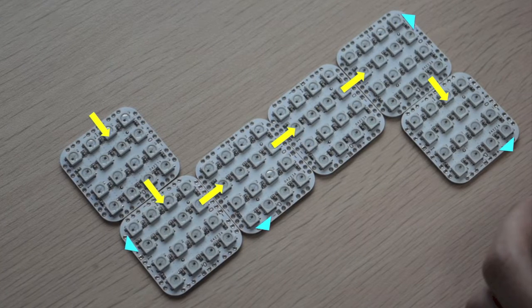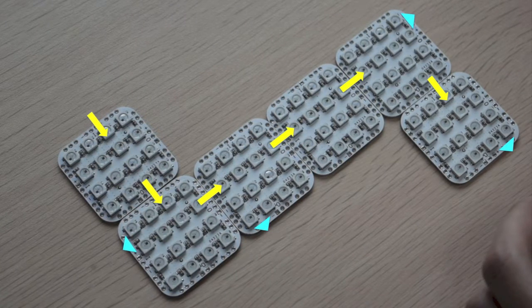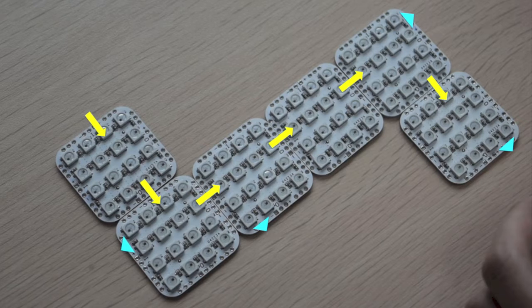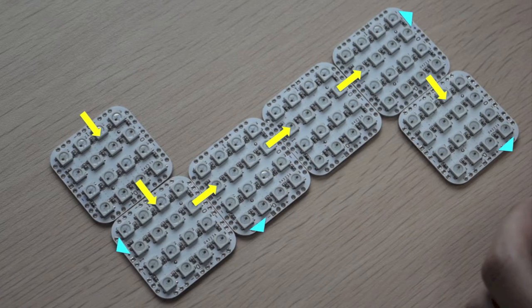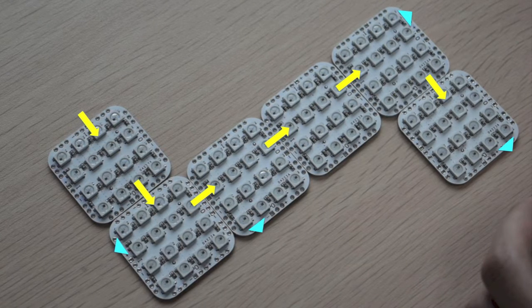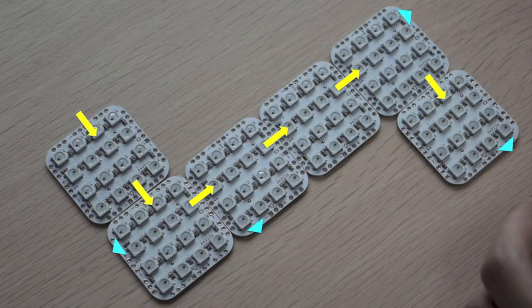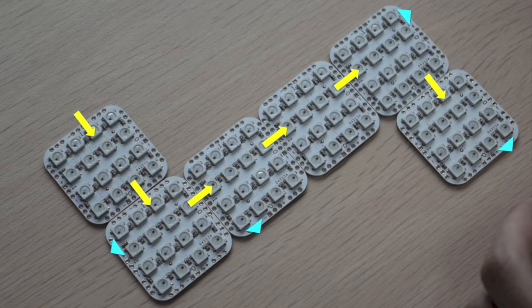When soldering, be sure to solder the headers into the correct holes as per these instructions in order for the circuit to be correctly connected, leaving no chance for the device to be short circuited. The blue arrows are connection points where pins are soldered for structural purposes only and no circuit passes through them.